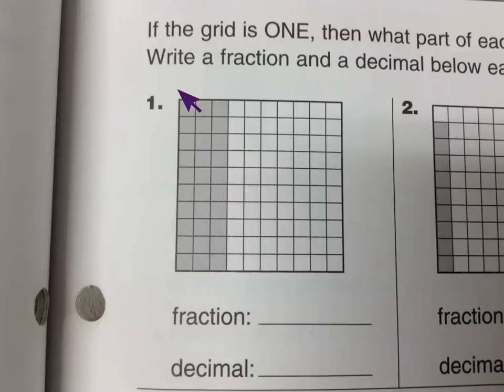And if we take a look here, you can see these columns are filled all the way in. There are three columns filled in, and there are ten columns total. So we have three out of ten filled in. So the fraction is going to be three out of ten.